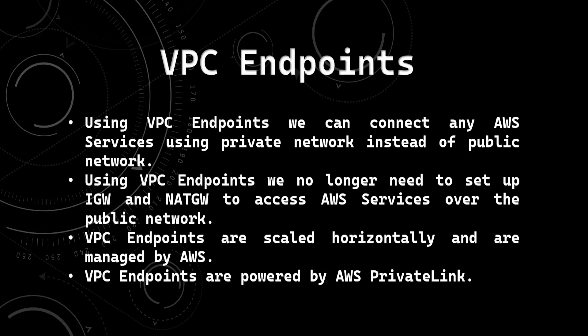The second point: using VPC endpoints, we no longer need to set up an internet gateway and NAT Gateway to access AWS services over the public network. Third point is VPC endpoints are scaled horizontally and are managed by AWS. Fourth point is VPC endpoints are powered by AWS PrivateLink.